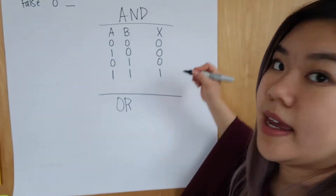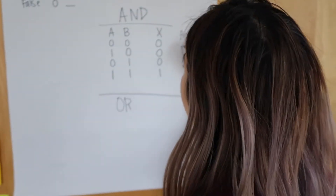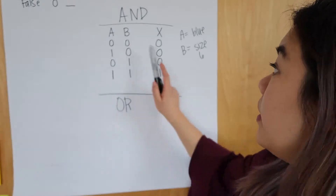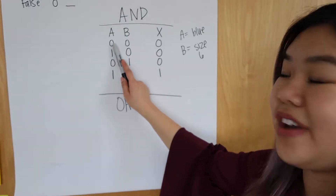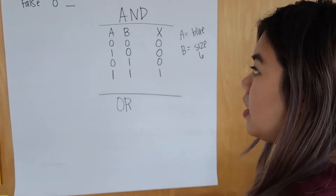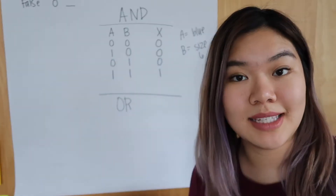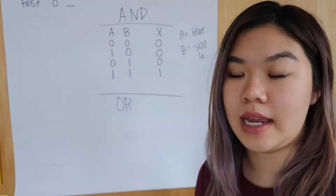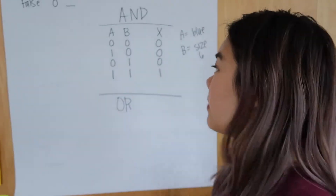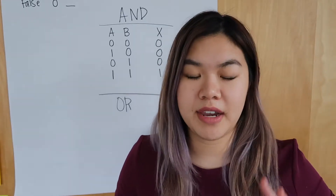We're going to say A is blue and B is size 6. If the shoes are not blue and not size 6, we're not going to show any results. If the shoes are blue but not size 6, we're not going to show those items. If they're not blue but they are size 6, we're not going to show those results either. The only case where you get results is when they're both blue and size 6. That is the case of AND logic.